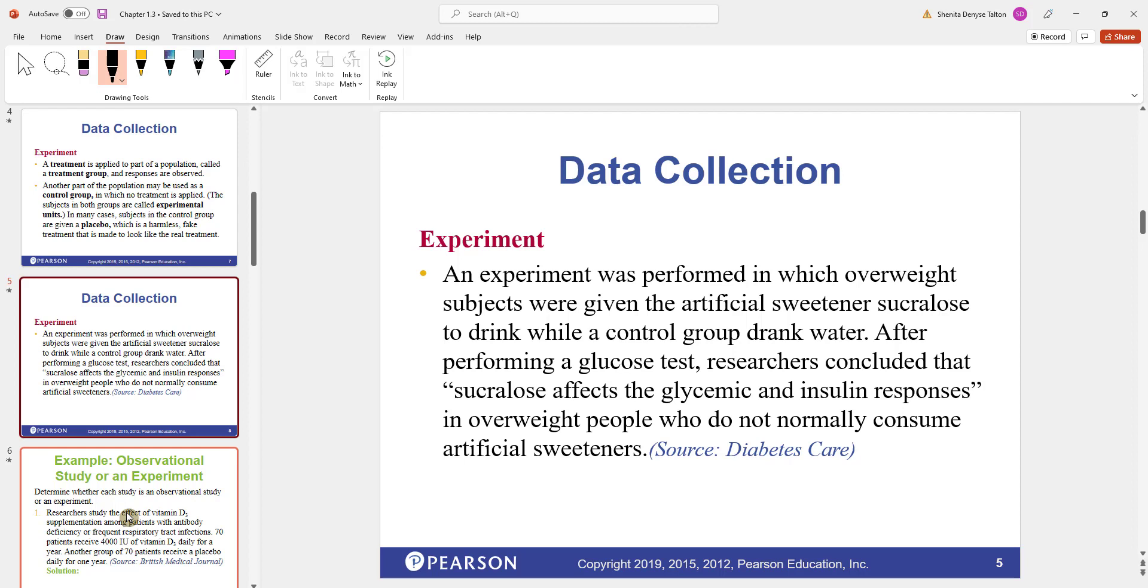Let's look at this example. An experiment was performed in which overweight subjects were given the artificial sweetener sucralose to drink while a control group drank water. After performing a glucose test, researchers concluded that sucralose affects the glycemic and insulin responses in overweight people who do not normally consume artificial sweeteners. As you can see, a treatment was applied here. They were given this artificial sweetener, and they looked at their sugar levels at that point.